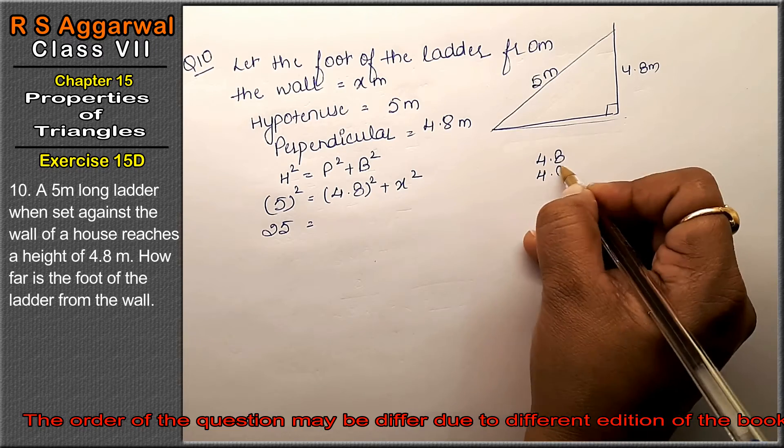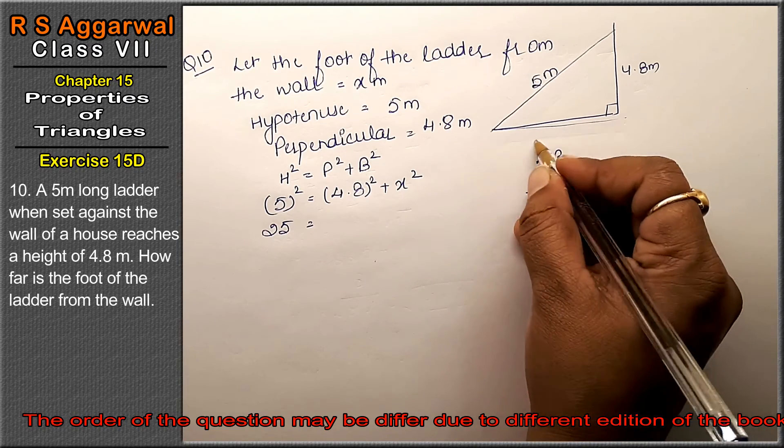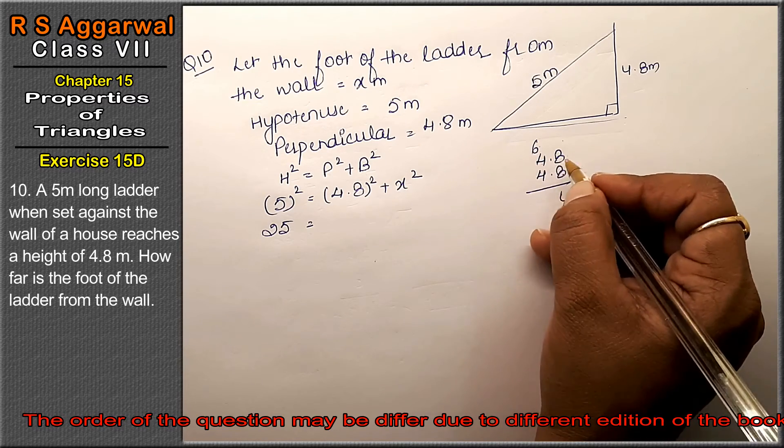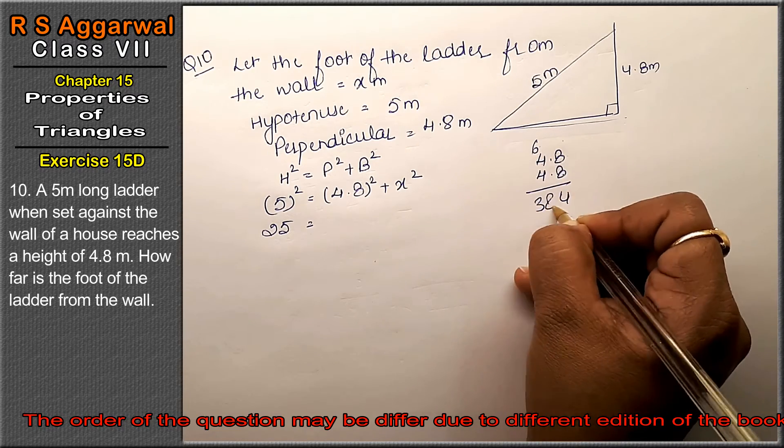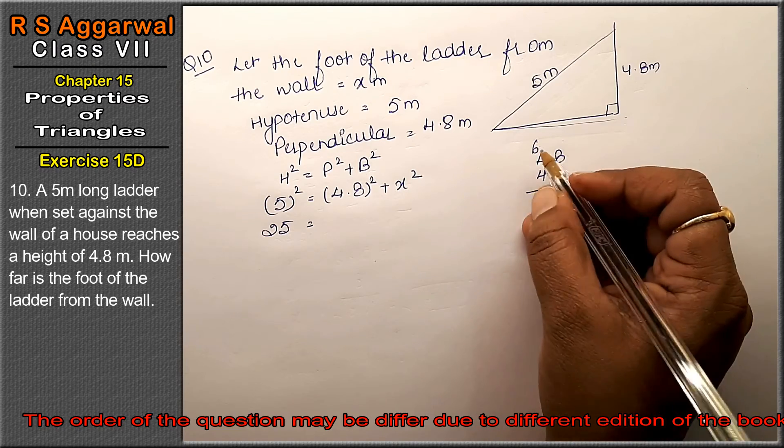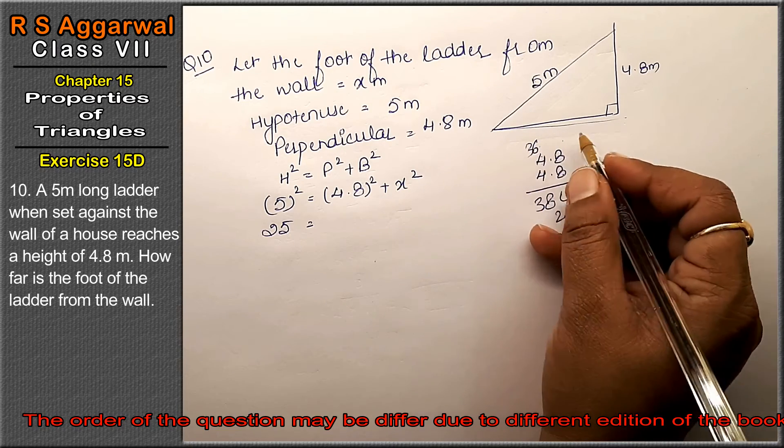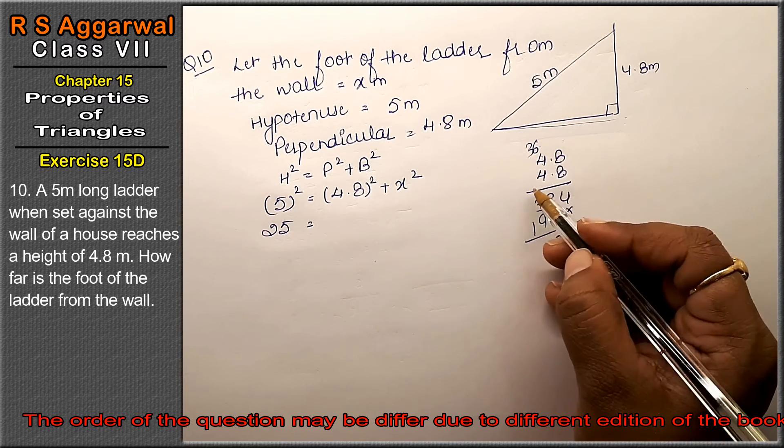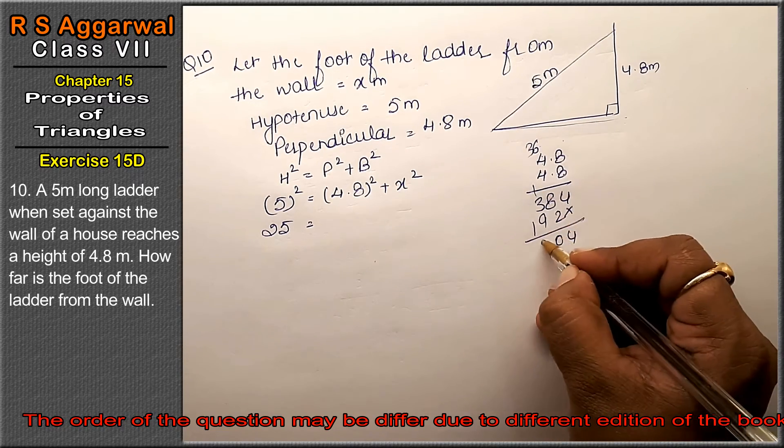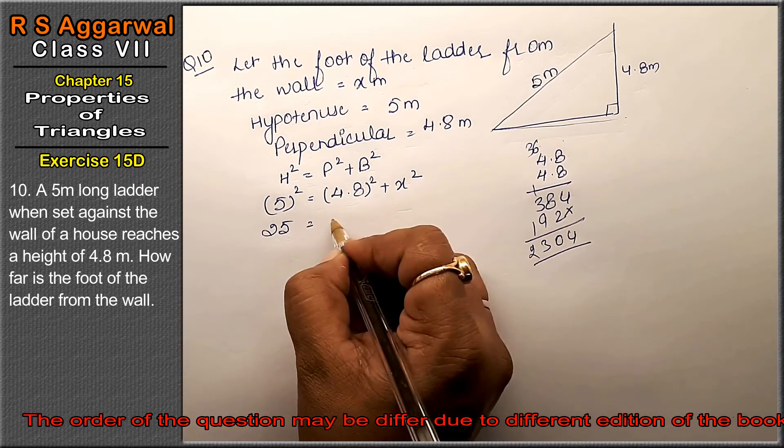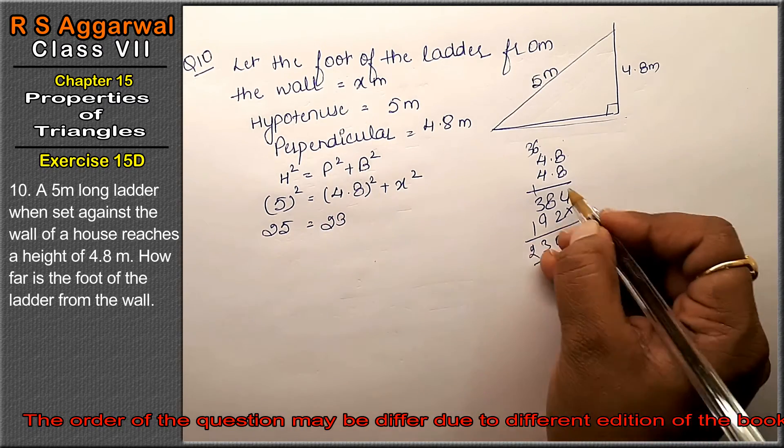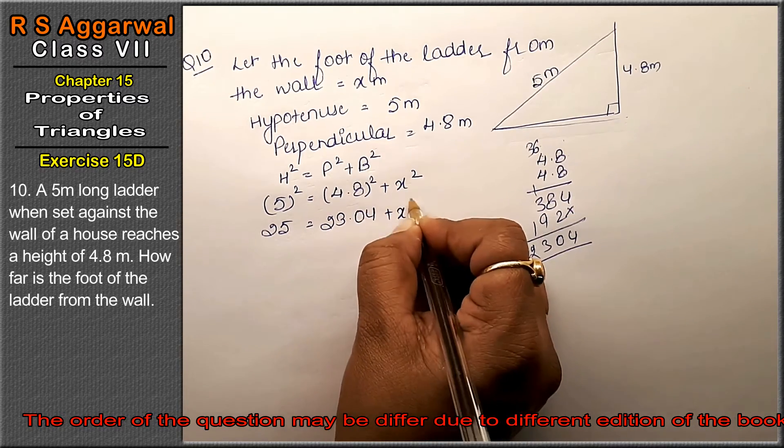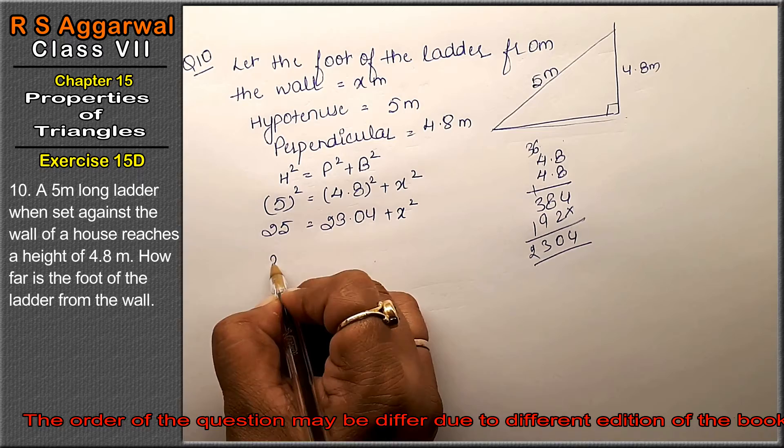5 squared is 25. 4.8 into 4.8: 8 times 8 is 64, 8 times 4 is 32, that's 38.4. 4 times 8 is 32, 4 times 4 is 16, that's 19.2 plus 1 is 23.